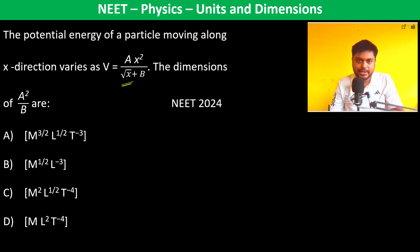We can see here that √x + b. Therefore, B must have the dimensions of √x. The dimension of B should be equal to the dimension of √x, which is meter to the power 1/2.